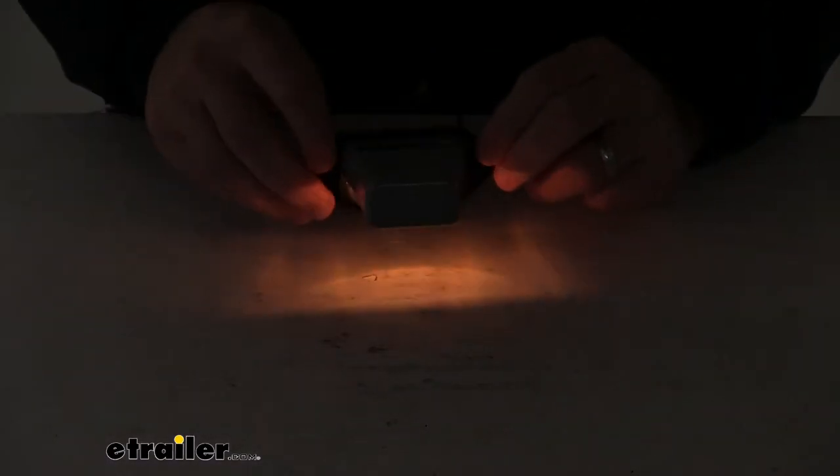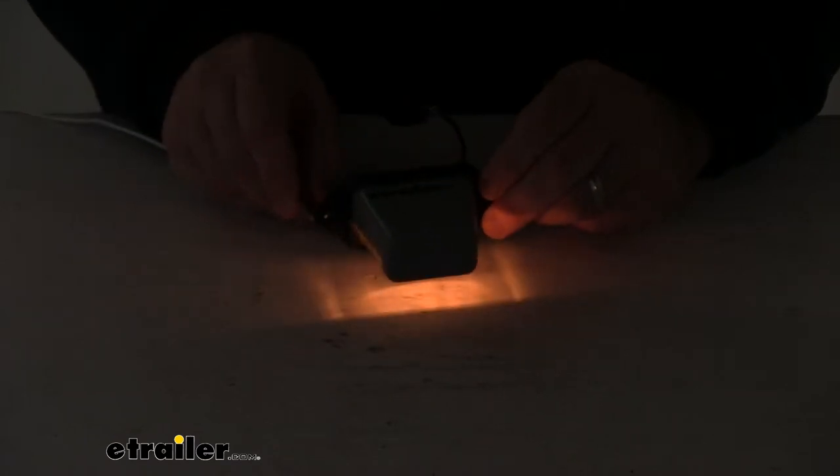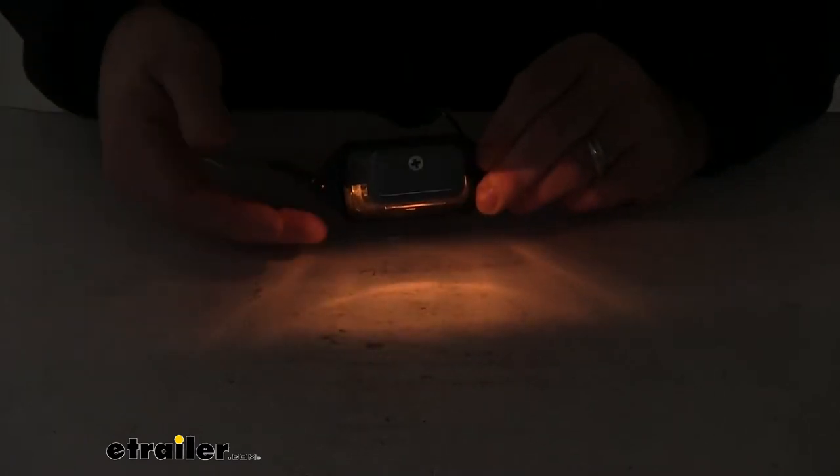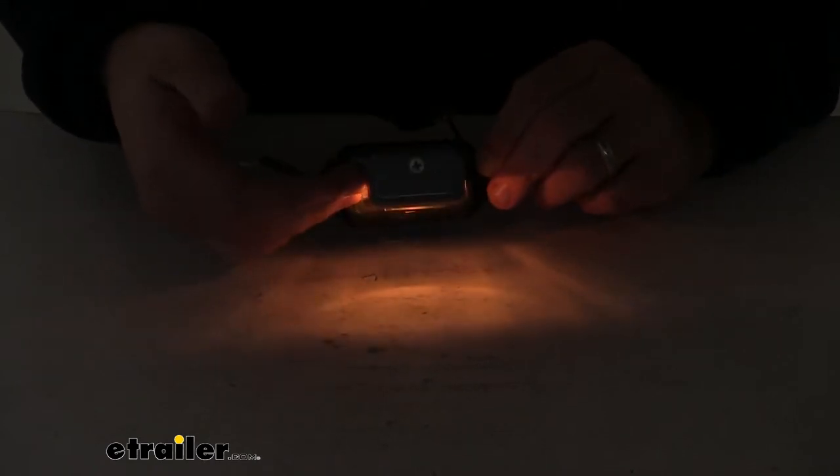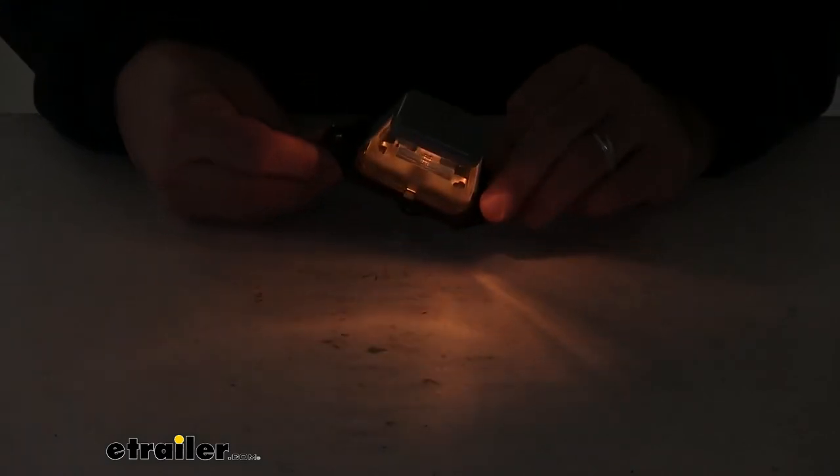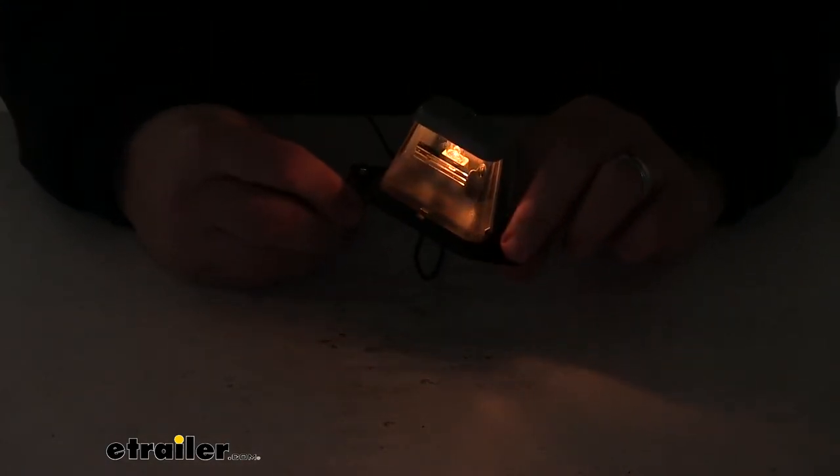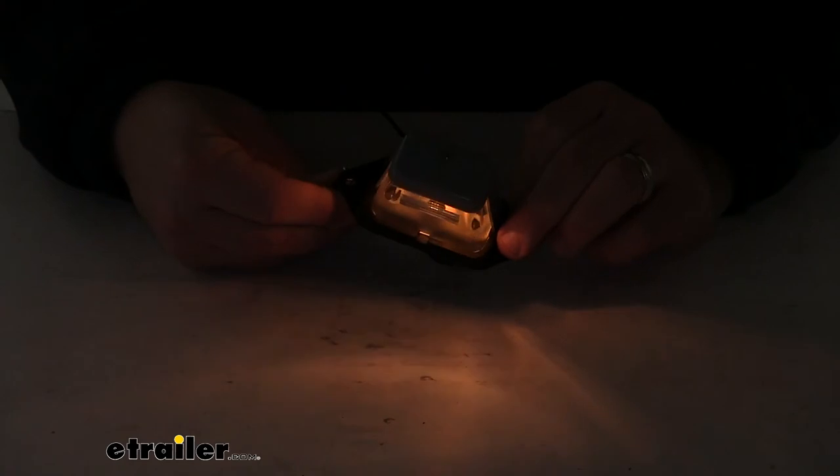So here you can see the light sends out a nice consistent signal. Again, we have light that shines at a downward angle, which will illuminate a license plate mounted directly below this light. And it contains a total of one bulb, and again, that is an incandescent bulb that is replaceable.